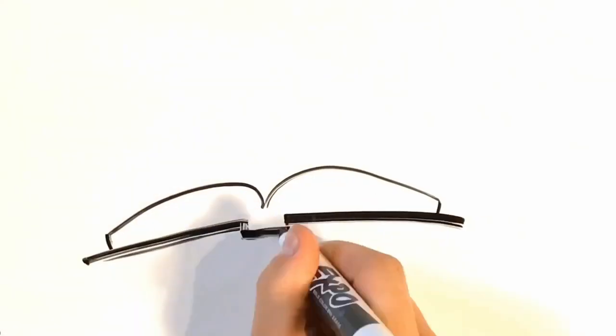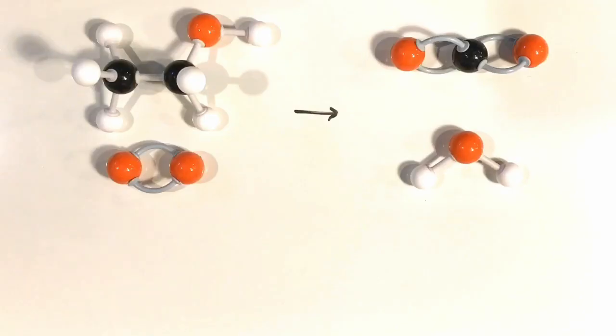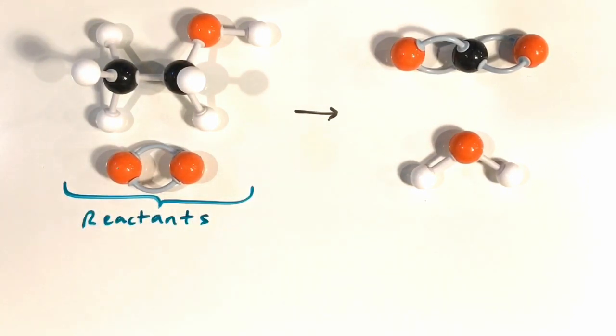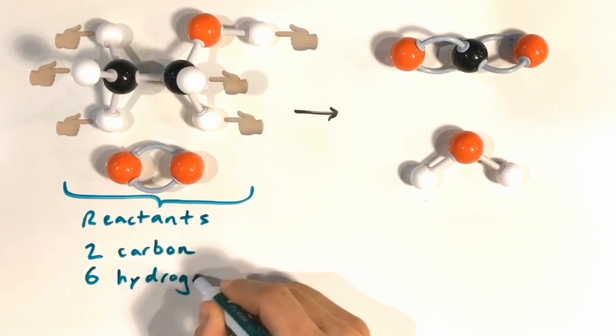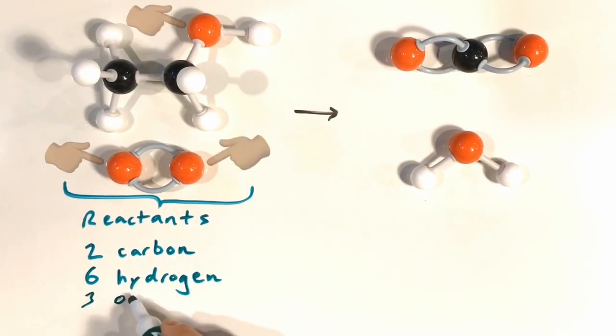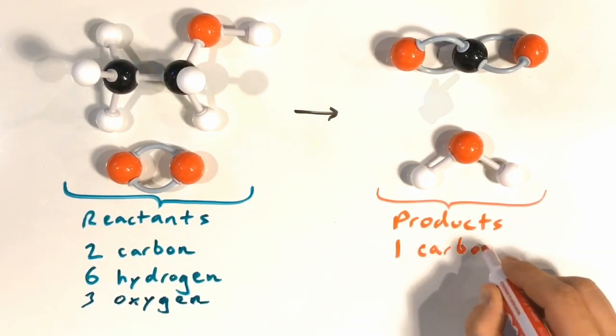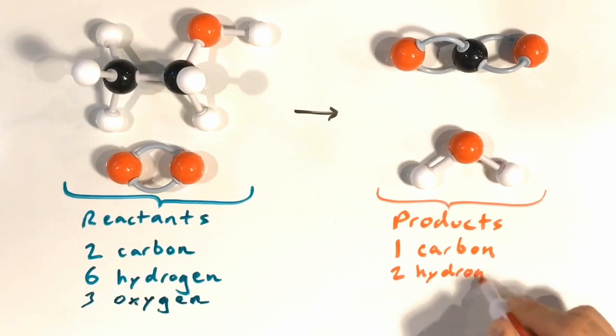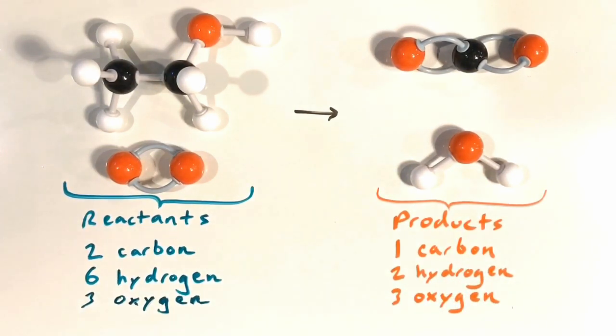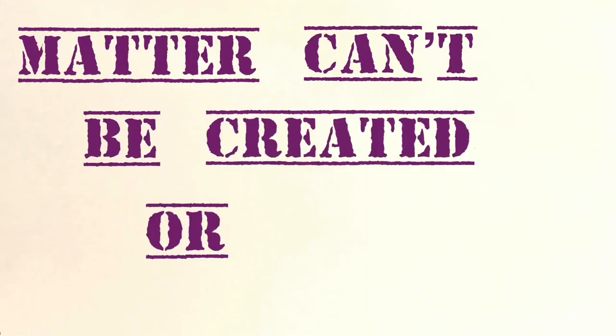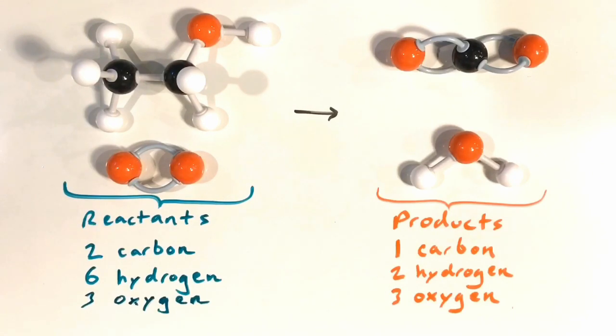So let's study this reaction more carefully. So to the left, we see what we started with, our reactants. Let's go ahead and count up all the atoms in our reactants. We have two carbon atoms, six hydrogen atoms, and three oxygen atoms. And if we look at our products, we see that we have one carbon atom, two hydrogen atoms, and three oxygen atoms. And this is not good because the numbers don't match. And this violates an important rule. Matter can't be created or destroyed. So that's something we need to fix right now.